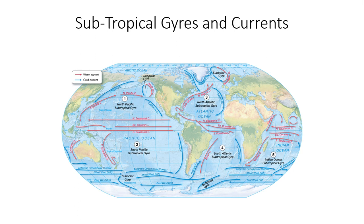In the Atlantic Ocean, the current system around the gyre includes the colder Canary current, which flows north to south along the coast of Spain down off northwestern Africa. That becomes the north equatorial current — a warm current flowing from Africa towards the Caribbean. Then you have the Gulf Stream current, which is very critical to east coast weather. It's a very warm current and one of the fastest moving currents in the world. Finally, you have the North Atlantic current.